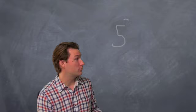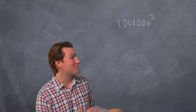5 squared would be 5 times 5. Let's do a crazy number. Like a million squared is a million times a million, times itself.